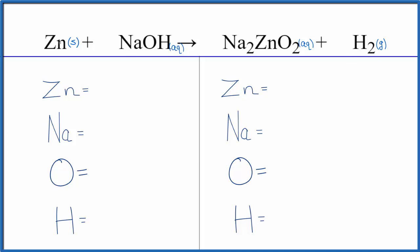Let's balance the equation. We have one zinc, one sodium, one oxygen, and one hydrogen. On the product side we have one zinc, two sodium atoms, two oxygens, and two hydrogen atoms.